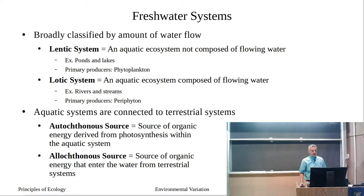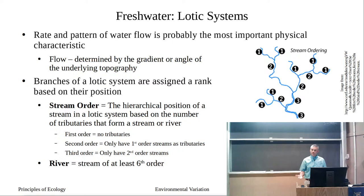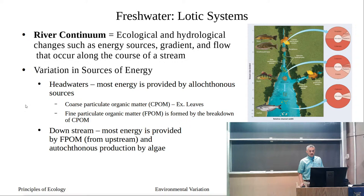We started our discussion of aquatic variation with freshwater lotic systems — specifically these lotic systems, which are composed of flowing water: streams and rivers. The river continuum has variation in many of its chemical and physical properties, and a lot of these properties correlate to stream order or hierarchical position in that river continuum.